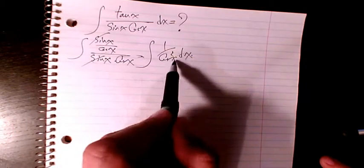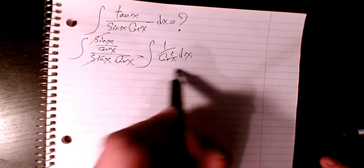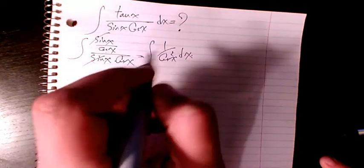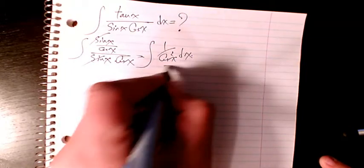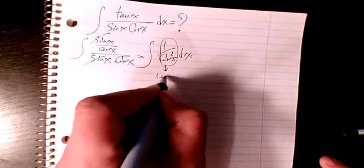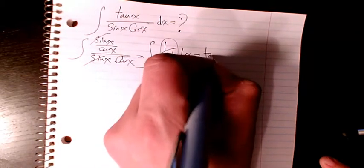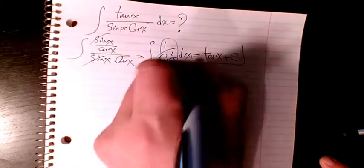1 over cosine squared x dx - that's the integration of 1 over cosine squared x, which is the same as the integral that equals tan x plus C. So that's the